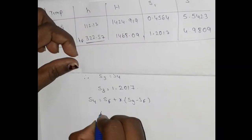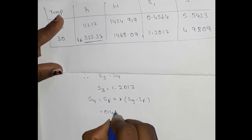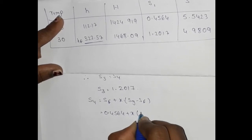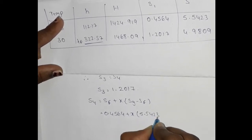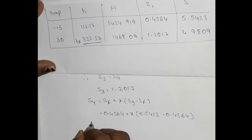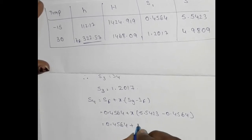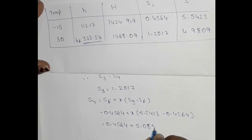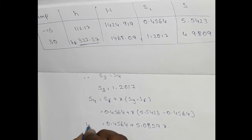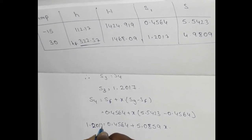Since S4 equals S3 equals 1.2017, we use the formula S4 equals Sf plus x into (Sg minus Sf). At minus 15°C: Sf equals 0.4564, Sg equals 5.5423. So 1.2017 equals 0.4564 plus x into 5.0859. Simplifying, x equals 0.1465.